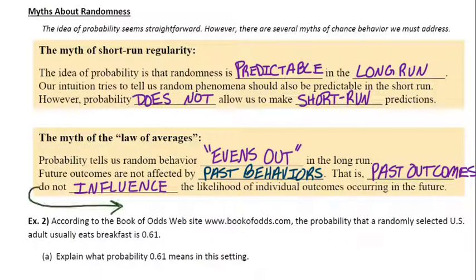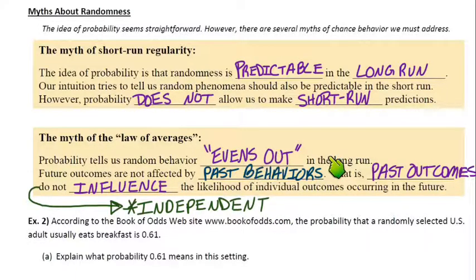And we'll talk more about that, too. So, the big idea here, the big takeaway, is that events that don't influence each other, like a past event doesn't influence a future event, those things are called independent. And that's also something we'll talk about later as well. So, those events would be independent. But people try to associate them together with this misconception about the law of averages.